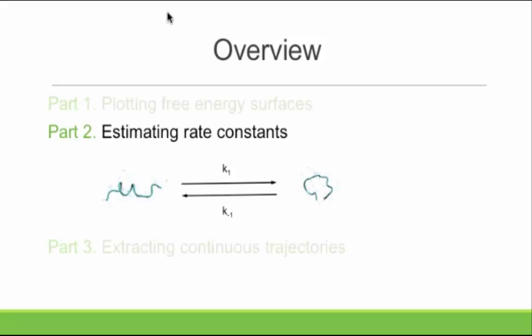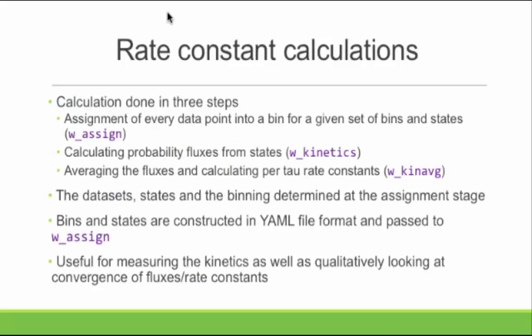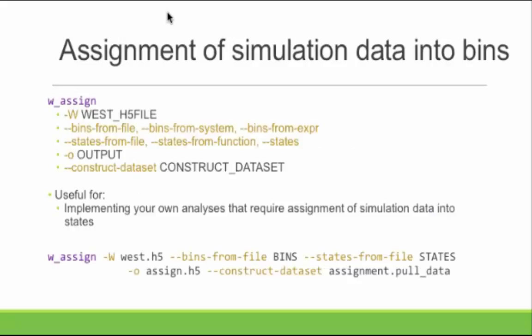Speaking of which, I'd like to move to actually estimating rate constants. I'm going to show you three new tools: WSI, W kinetics, and W kin average. WSI takes in your simulation data and a binning definition, and it assigns every single data point you feed into it into separate bins. You define your own bins, your own states, and give it the data you want. This is really, really flexible.